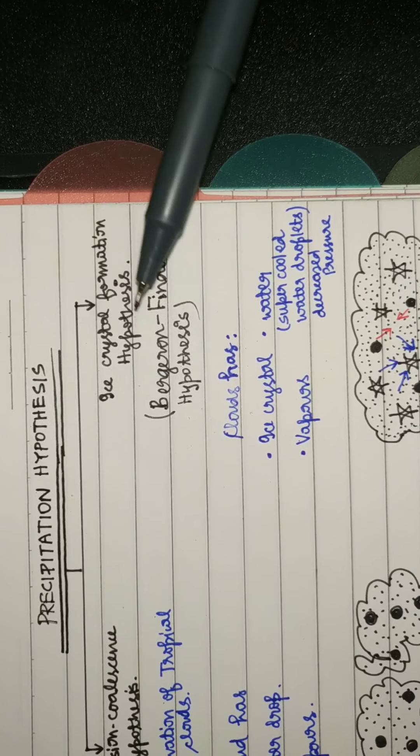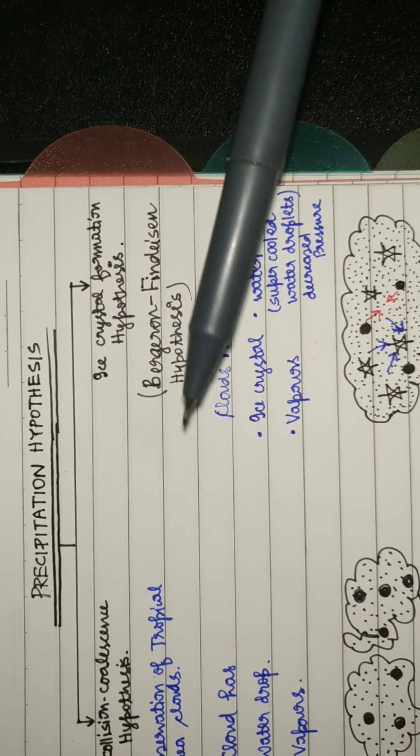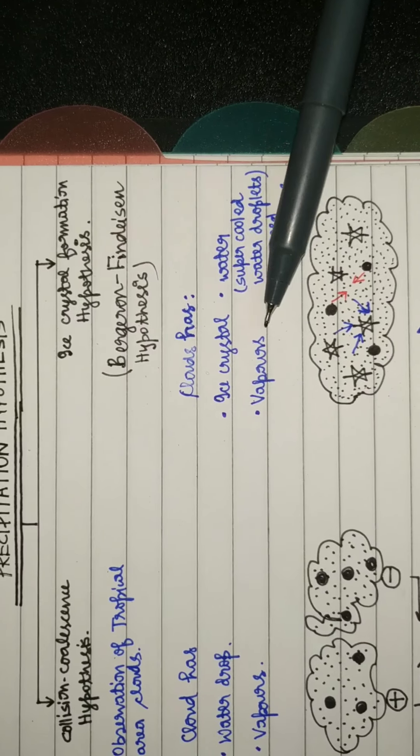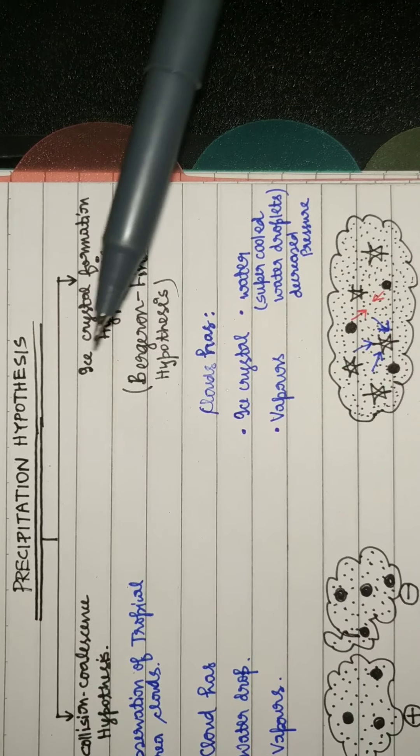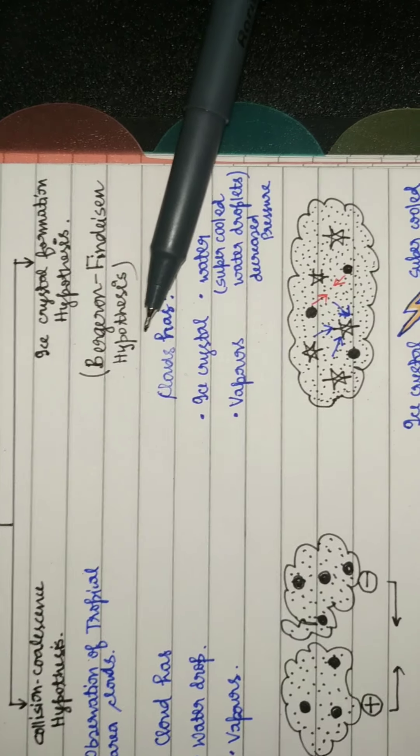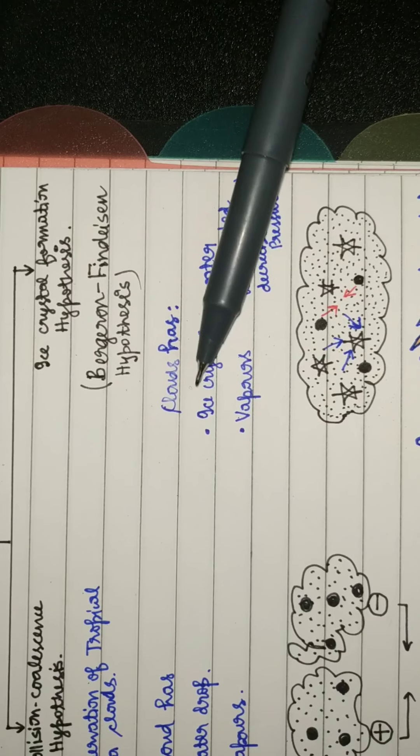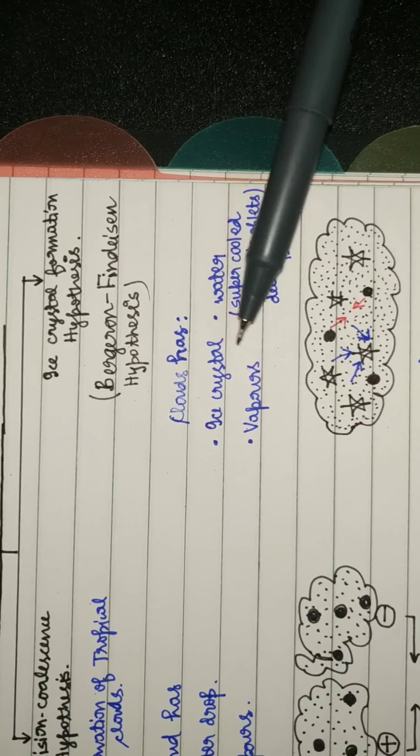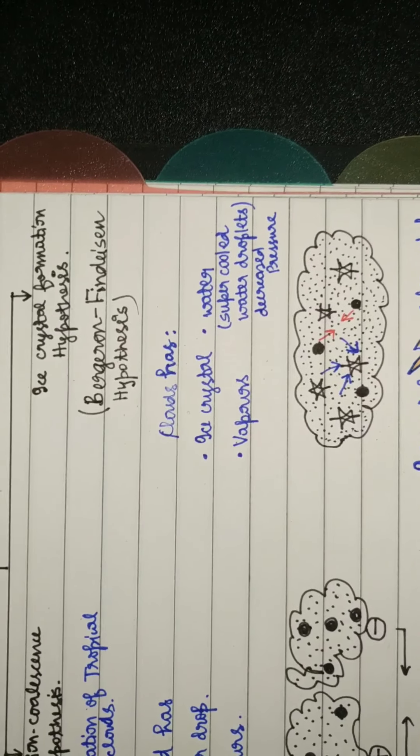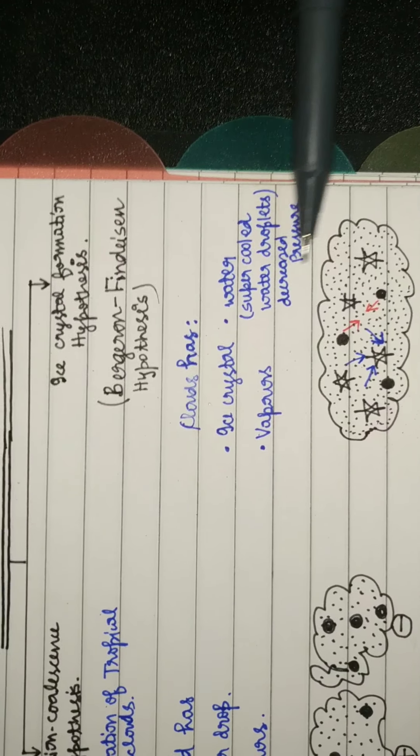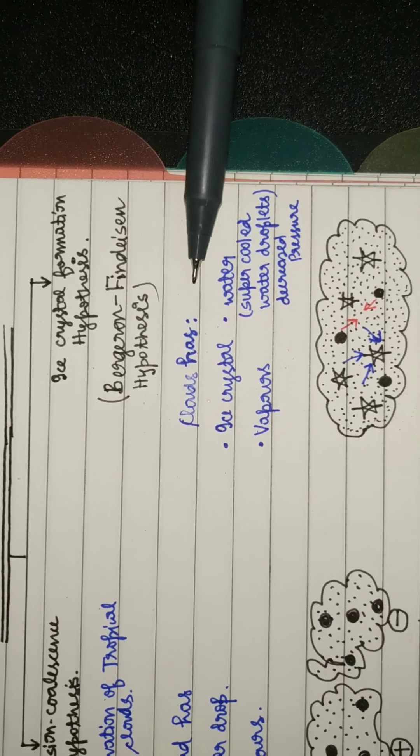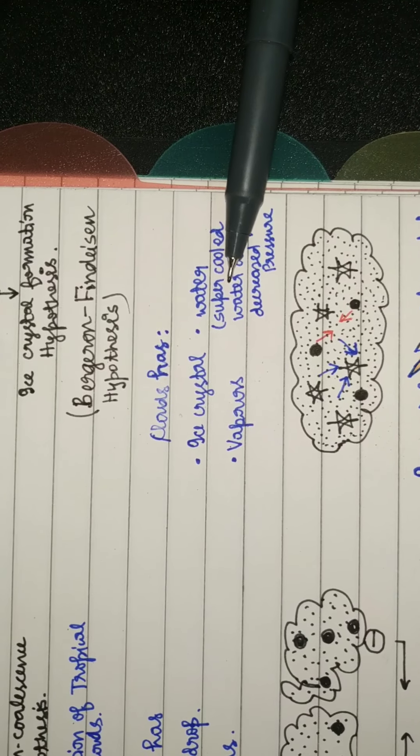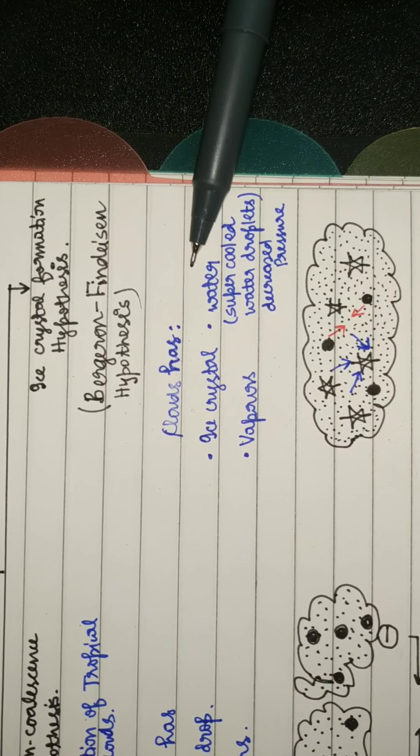The second hypothesis is the ice crystal formation hypothesis, also known as Bergeron-Findeison hypothesis. This theory was developed by the observation of temperate clouds. Hence, this has ice crystals, water droplets, and vapors.